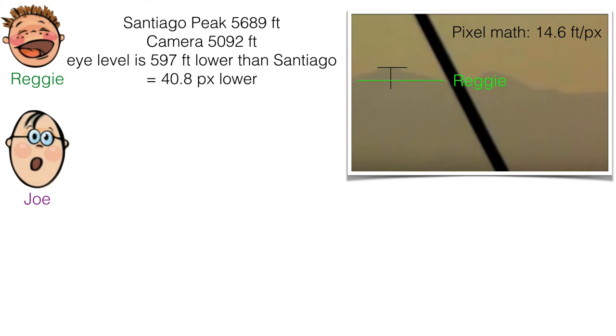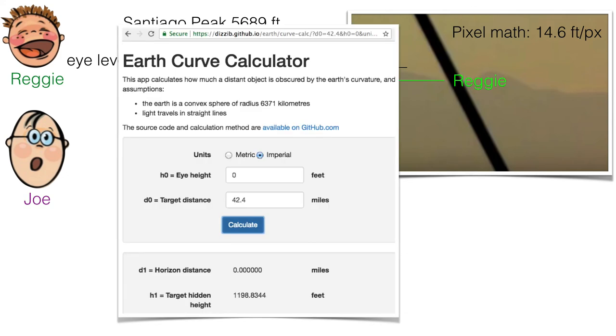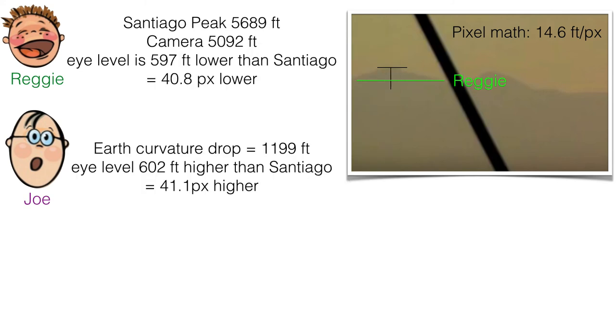Joe says the earth is a globe. So he used the earth curve calculator, but he put in an eye height of zero because all he was interested in was curvature drop. He was not interested in obstruction. So that gives him a curvature drop of about 1200 feet. So that translates into 41 pixels. So in purple, there's Joe's estimate of eye height or eye level, I should say.